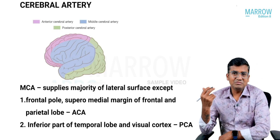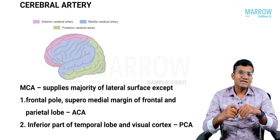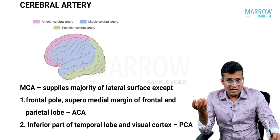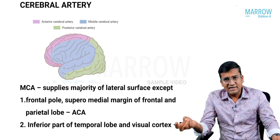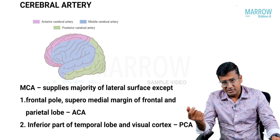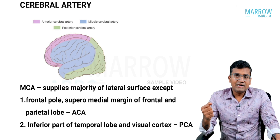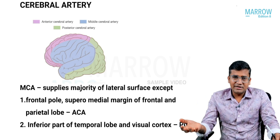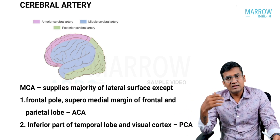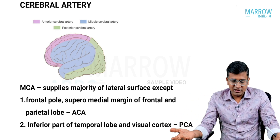Let's look at the blood supply of the cerebrum. The cerebrum is supplied by three cerebral arteries: the middle cerebral artery, anterior cerebral artery, and the posterior cerebral artery. The posterior cerebral artery is a branch of the basilar artery, while the anterior cerebral artery and middle cerebral artery are terminal branches of the internal carotid artery.